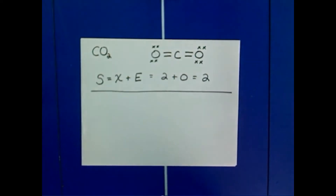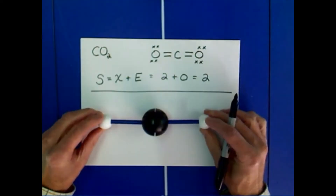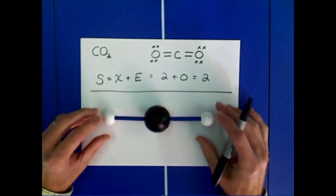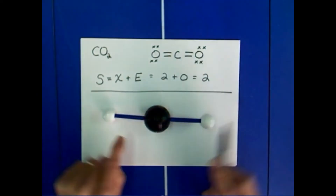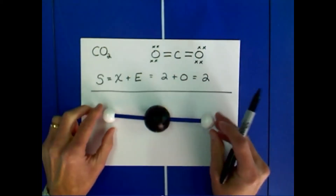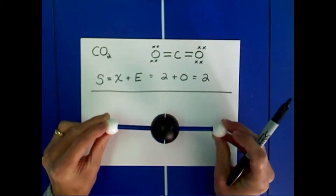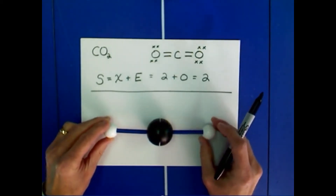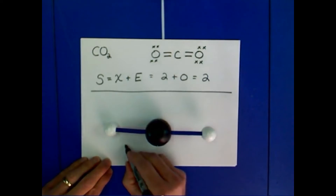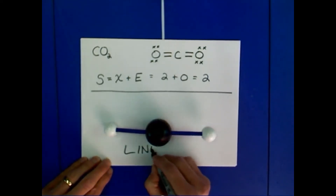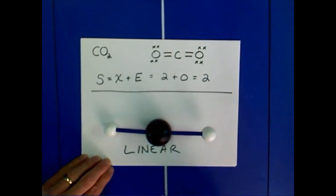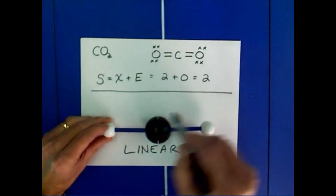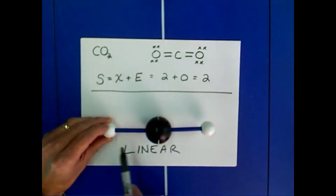When we have two atoms attached to a central atom with a steric number of 2, those bond pairs — represented by these blue bonds — go 180 degrees from one another. We call this particular structure a linear molecular structure. The angle between these three atoms is 180 degrees; it's a full line.